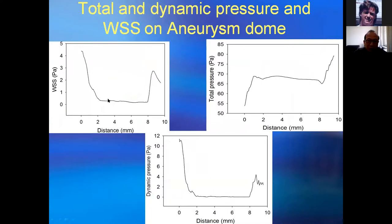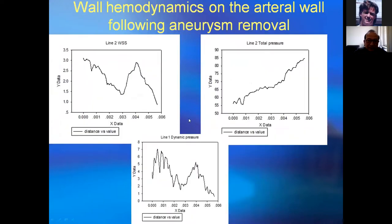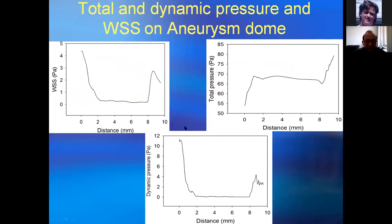The aneurysm wall shear stress, dynamic pressure, and total pressure were measured. After the aneurysm was removed, the hemodynamic stress profile on the vessel wall shows shear stress very high over 1 PA, total pressure also very high, and dynamic pressure very high over 1 PA. Compared with after aneurysm development: shear stress below 1 PA, dynamic pressure almost 0, total pressure about 75 PA. This indicates that aneurysm formation decreases hemodynamic stresses.